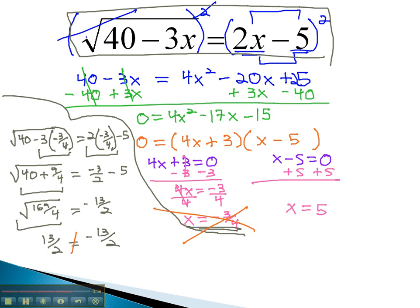We still have to check the x equals 5. So let's plug this into the original equation. We get the square root of 40 minus 3x, which is 5, equals 2x, or 5, minus 5.